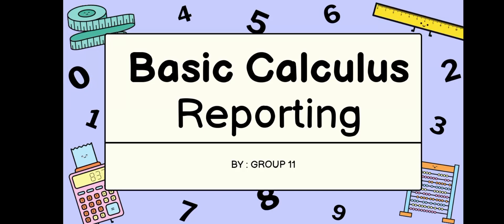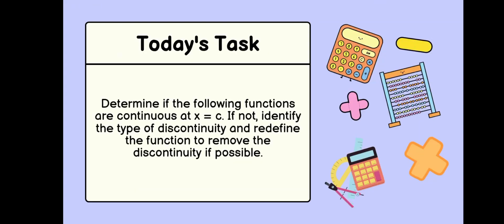Good day everyone. We are Group 11 of 11STEM Understanding, and we are here to present some examples of the different types of discontinuity and discuss how to answer them. For today's task, we are to determine if the following functions are continuous at x equals c. If not, identify the type of discontinuity and redefine the function to remove the discontinuity if possible.